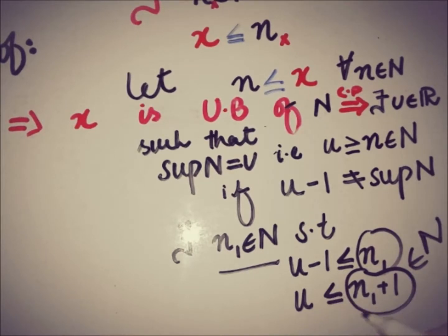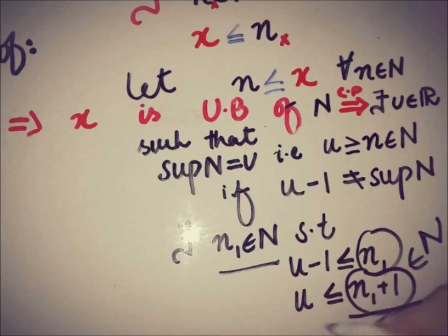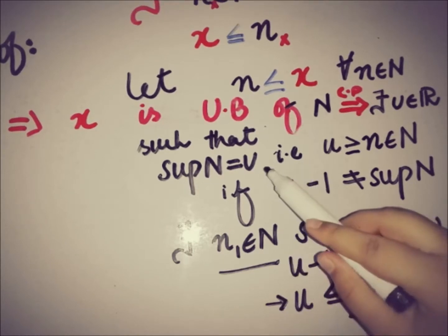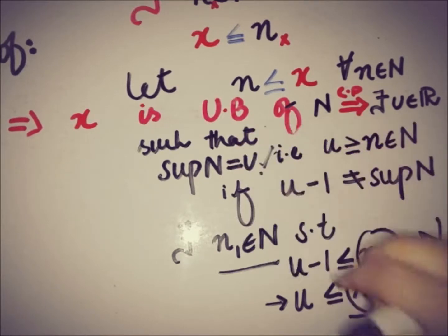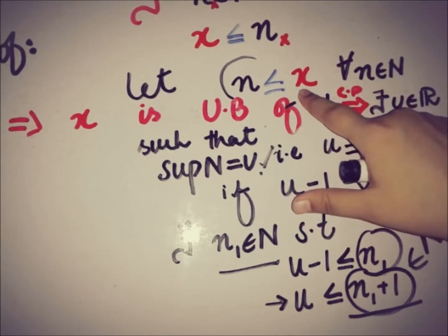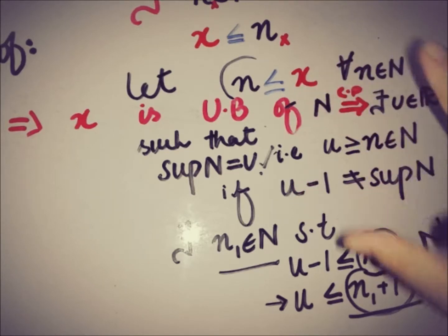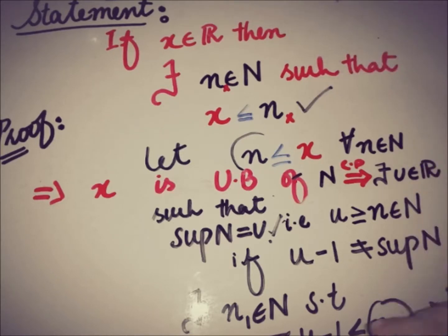So u is less than or equal to n₁ plus 1, which is an element of N. This means there is an element in N that is greater than or equal to u, which contradicts u being the supremum of N. This contradiction shows that our assumption — that every natural number is less than or equal to x in R — is false. Therefore the set of natural numbers is not bounded in R, and this is what the Archimedean property states.